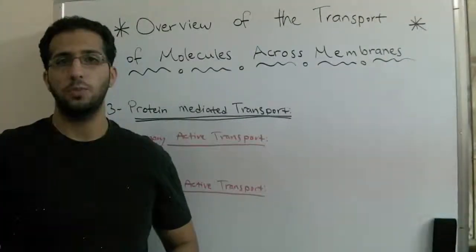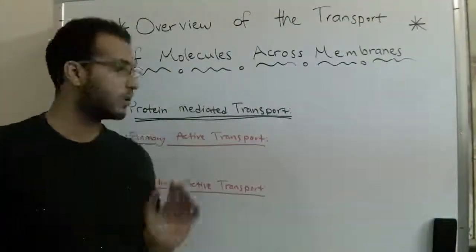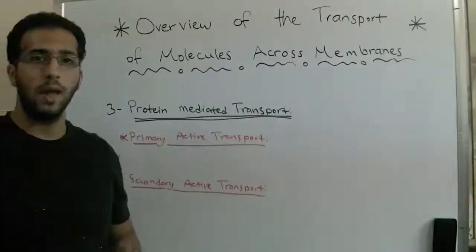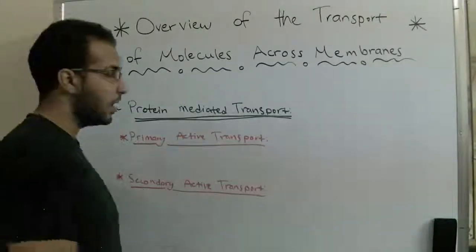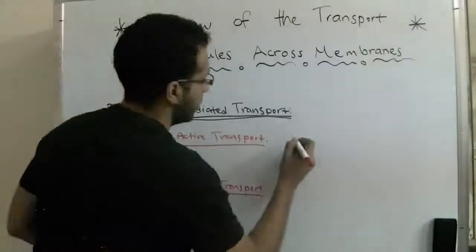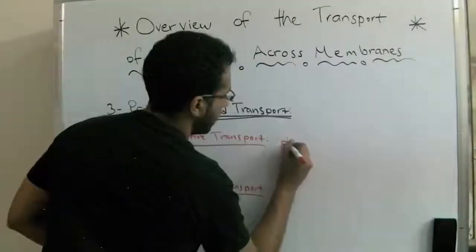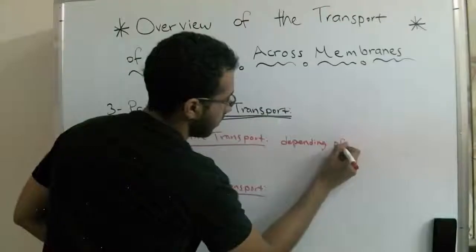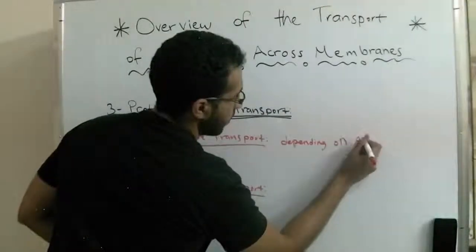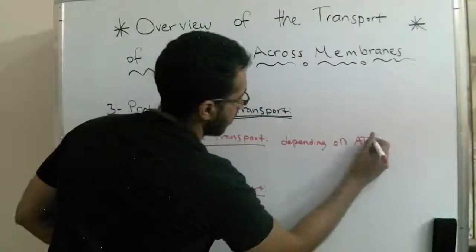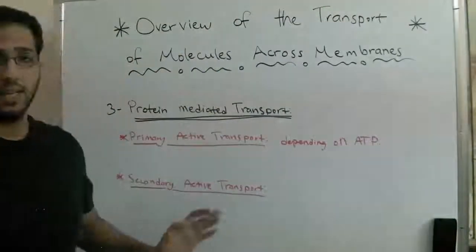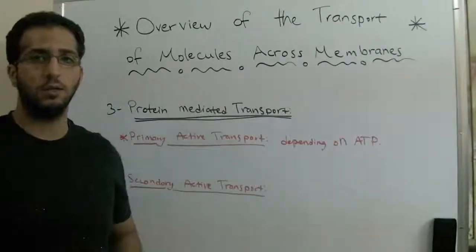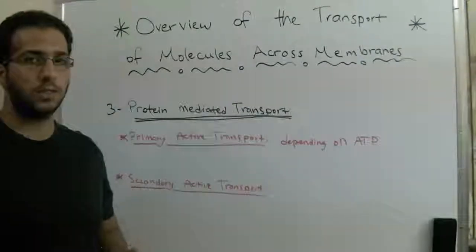Active transport can be either primary or secondary active transport. Primary active transport depends on ATP, while secondary active transport depends on the electrochemical gradient to move from one side to another.